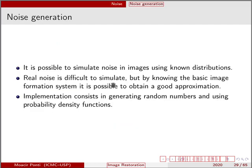The process of simulating noise in images uses known distributions. Real noise is very difficult to simulate, but by knowing some basic information about the image or the imaging system, it is possible to obtain a good approximation of the noise. Implementation of this process consists in generating random numbers and using probability density functions.